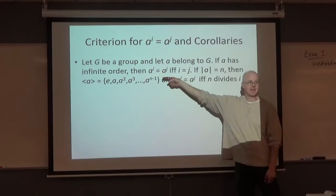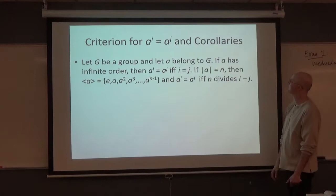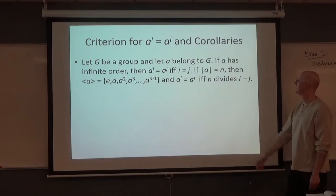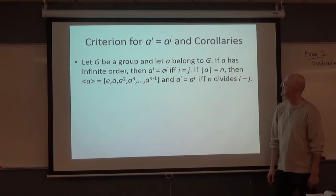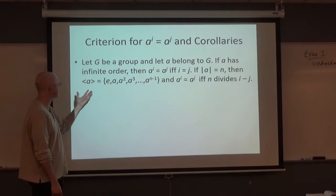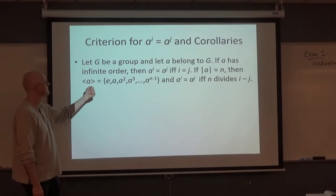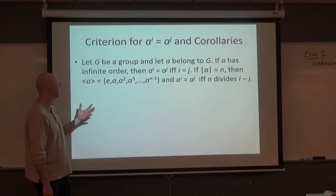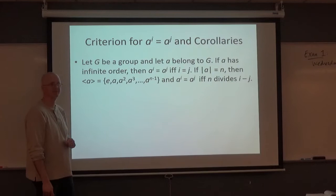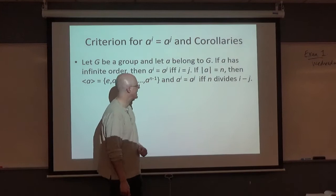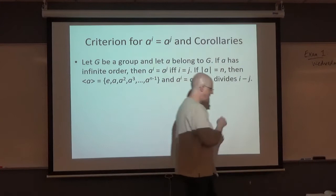Certainly, one direction of the proof of that would be trivial. If i equals j, then certainly a^i equals a^j. But, what about the other direction? We'll look at it here in a minute. The second part involves an if and only if as well. Suppose the order of a is some positive integer N. Part of the conclusion of the theorem is that the cyclic subgroup generated by a then has these N elements. You can say the simplest form. It's not that you can't raise a to a higher power. You could raise a to the 2N power, for example. But, it would always equal one of these. And, you can make this if and only if conclusion. a^i equals a^j if and only if N divides i minus j.